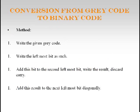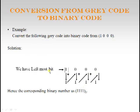Now let us see how to convert Gray code into binary. Write the given Gray code, write the leftmost bit as-is, add this bit to the second leftmost bit diagonally and write the result discarding any carry, then add that result to the next bit diagonally. For example, 1000 in Gray code: write MSB 1, then 1+0=1, then 1+0=1, then 1+0=1. The resultant binary for the given Gray code is 1111.